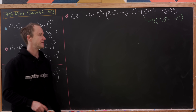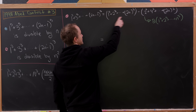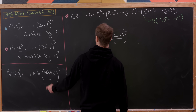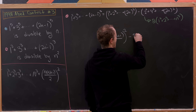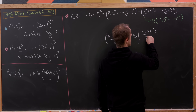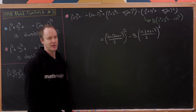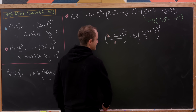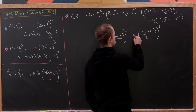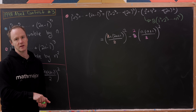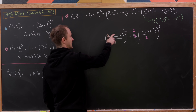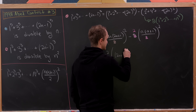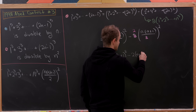Applying our formula with capital N equal to 2n for the first part gives 2n times 2n plus 1 all over 2, squared. For the second part with capital N equal to n, we get 8 times n times n plus 1 all over 2, squared. The 2 in the first expression cancels one factor of 2, and the 8 reduces to 2 because the 2 inside is being squared. Factoring out n squared, we're left with n squared times 2n plus 1 squared minus 2 times n plus 1 squared.